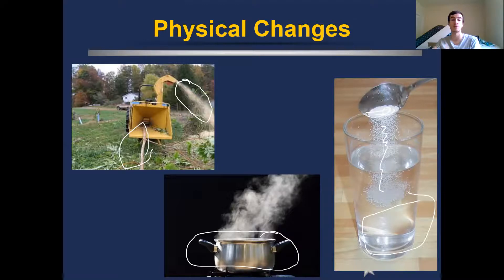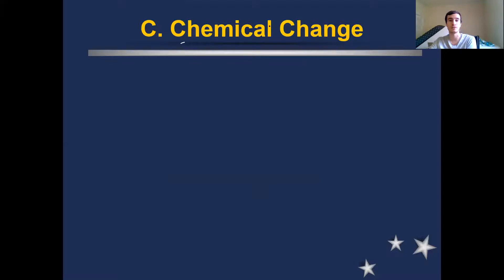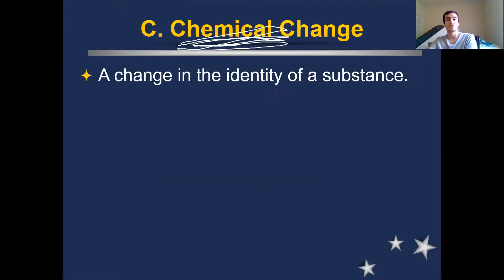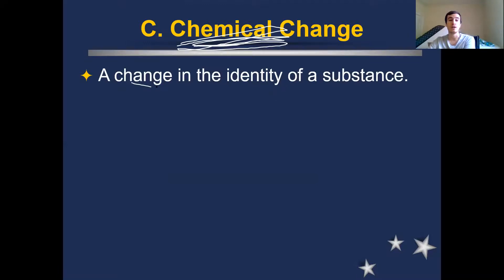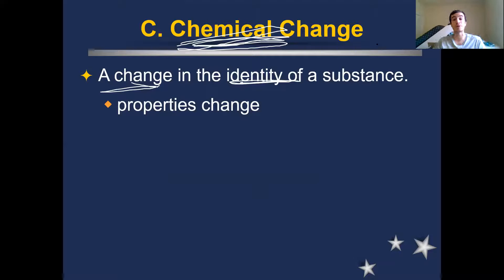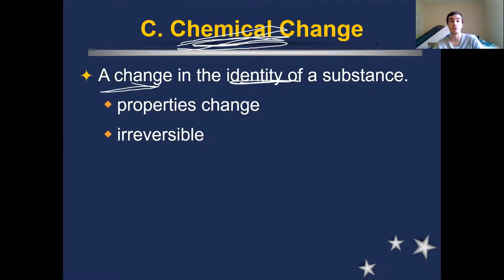This is completely different when we talk about chemical changes. When a chemical change occurs, we are changing the identity of a substance — taking one substance, one chemical, and turning it into something completely new and different. When you do this, your properties change because you're ending up with something new that wasn't there before. Chemical changes are usually pretty irreversible, meaning once they happen, it's incredibly difficult to reverse them — you have to do a whole other set of reactions and can't just go back and forth easily.